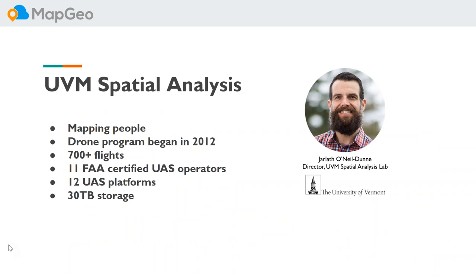I'm Jarleth O'Neill Dunn, director of the Spatial Analysis Lab at the University of Vermont. We got interested in drones after we were hit with Tropical Storm Irene back in 2011 and realized traditional remote sensing capabilities didn't give us a good way to do damage assessment. Since then we've had about three hundred eighty thousand dollars worth of equipment, over seven hundred flights, and a bunch of licensed UAS operators. We've increasingly been working with organizations to look at how they integrate UAS into their operations.